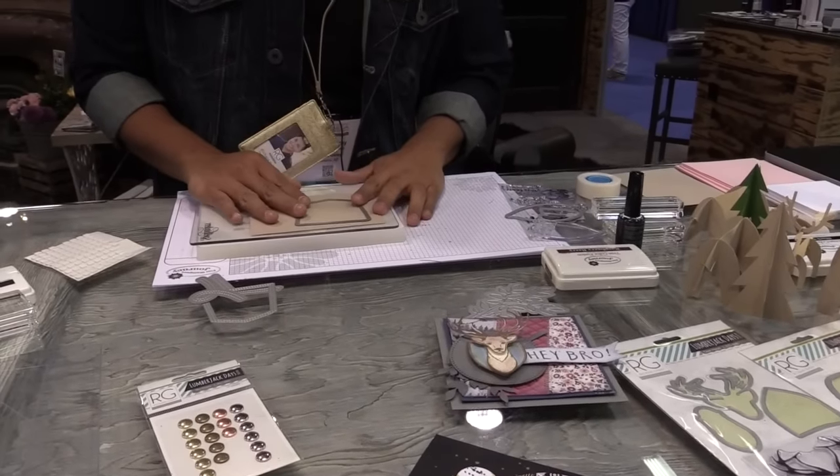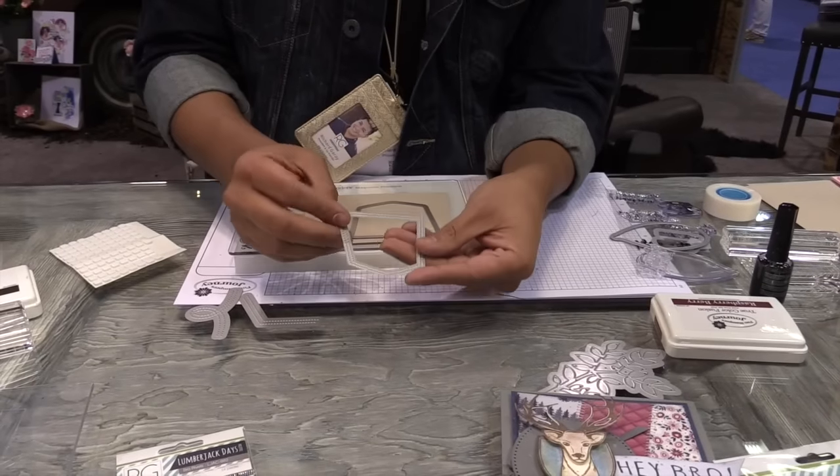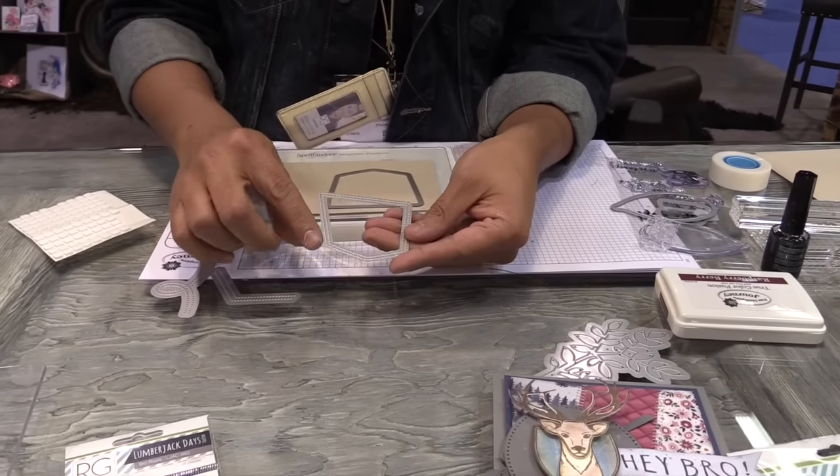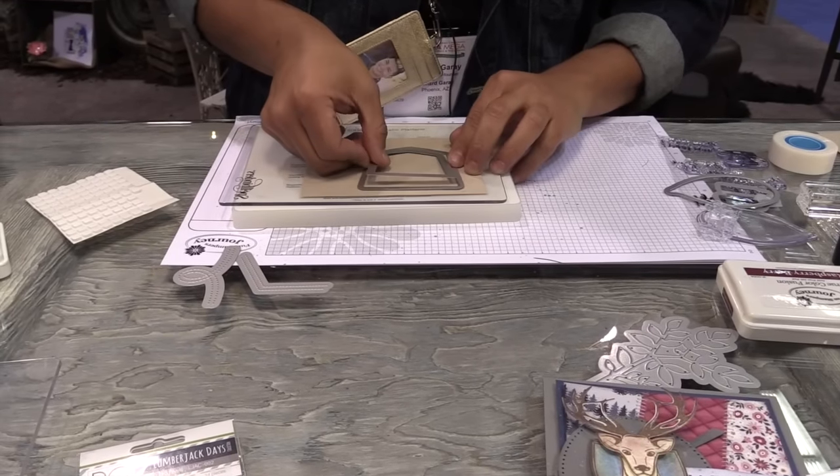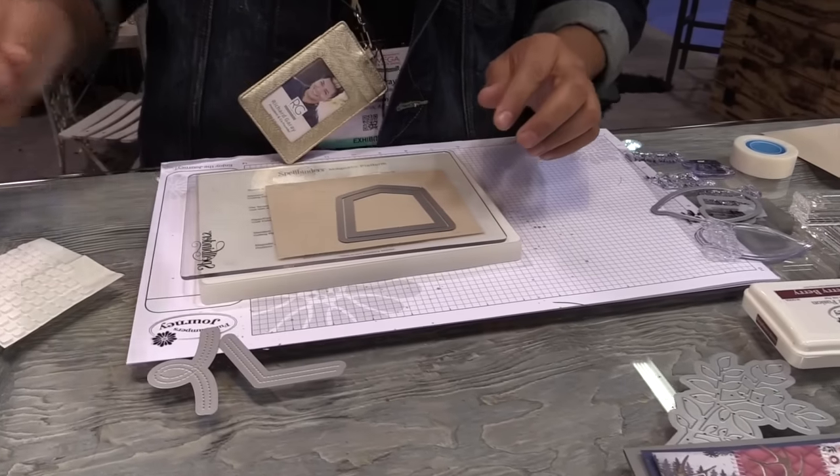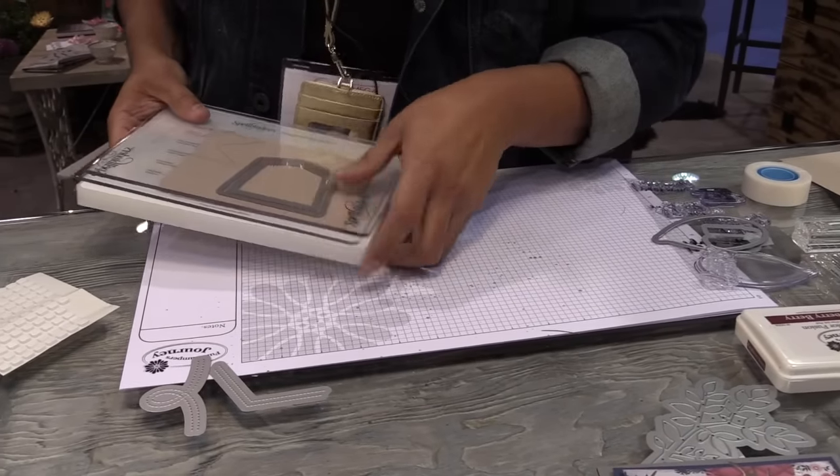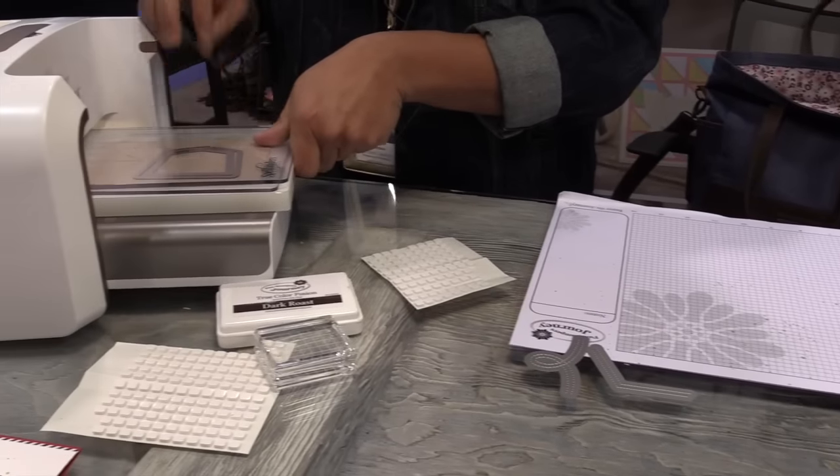And this die is super fun because you can come in with your die to create your pocket, but it gives you that stitch element across the entire pocket inside. So you can come in, bring these two, marry them together. Now I'm going to come back with my cut plate and I'm just going to run this through my platinum machine.